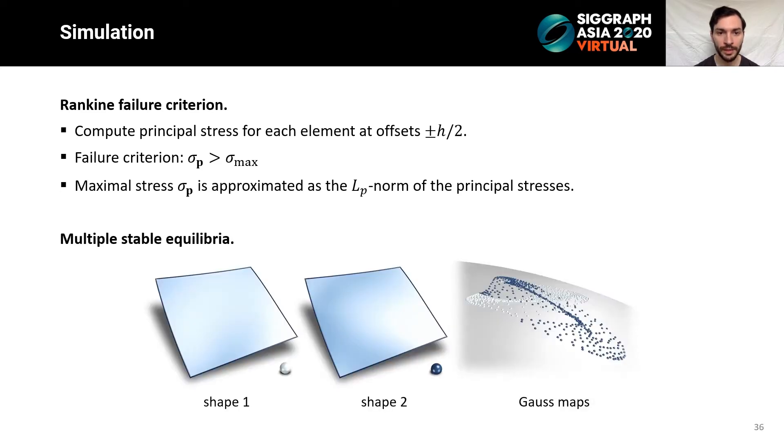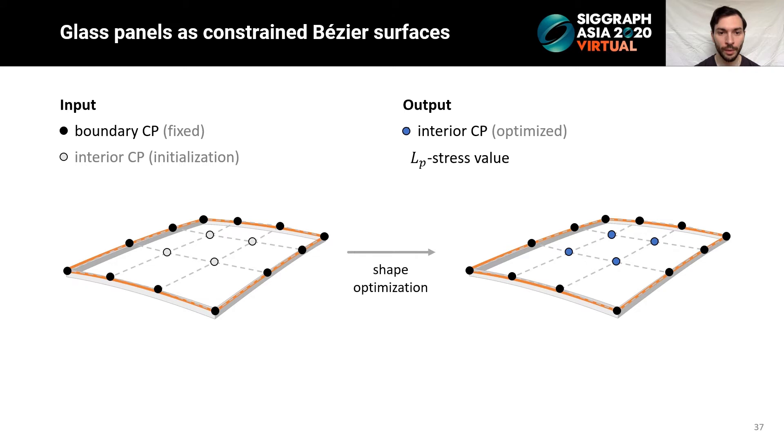A crucial observation at this point is that the solutions are not necessarily unique for a given boundary. In this figure, for example, two alternative stable states have very different Gauss maps and almost orthogonal bending directions. We would like to be able to predict both of them for design purposes. However, here only one of them is obtained as a solution depending on the initialization, and it is hard to guess an initialization leading to an alternative solution. To recap, using our shape optimization routine, we can sample panel boundaries and obtain panel geometries conforming to them along with corresponding L_p stress values. These outputs are used to train our data-driven model, and now Konstantinos will move on with its description.